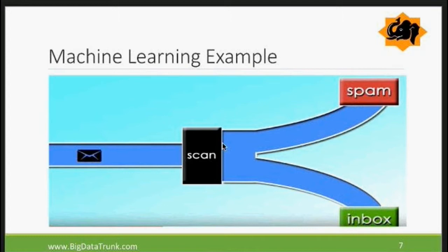Companies like Google and others have defined algorithms which identify spam based on language, who is sending, which region, and several other parameters. The servers are able to immediately understand, learn, and determine whether something is spam or not. If you go to your spam folder, you'll see all kinds of things — and machine learning is helping us eliminate that.